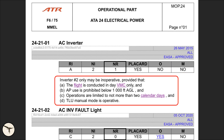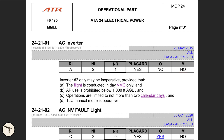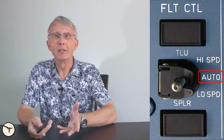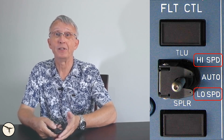The text states number two can be inoperative, provided that: A — the flight is conducted in day VMC only, that is visual meteorological conditions; B — autopilot is prohibited below 1,000 feet above ground level; C — operations are limited to not more than two calendar days; and D — TLU manual mode is operative. The TLU is the rudder travel limit unit, which restricts the movement of the rudder at high speeds. It is usually automatic, and now we have to check that the manual mode is operative.